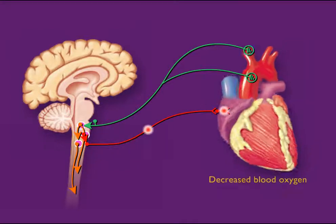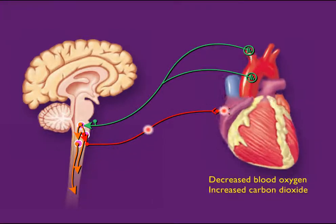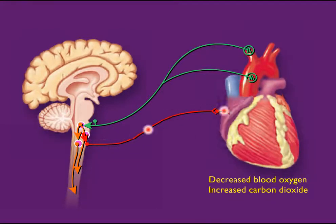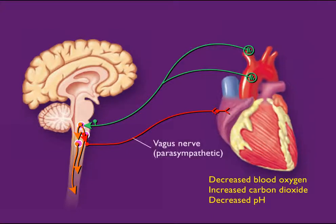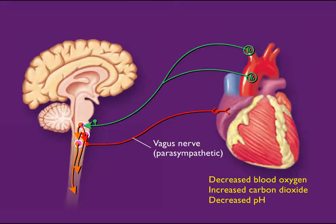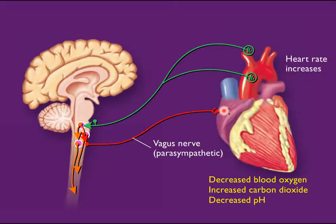Decreased blood oxygen, increased carbon dioxide, or decreased pH decrease parasympathetic stimulation of the heart, which increases the heart rate.